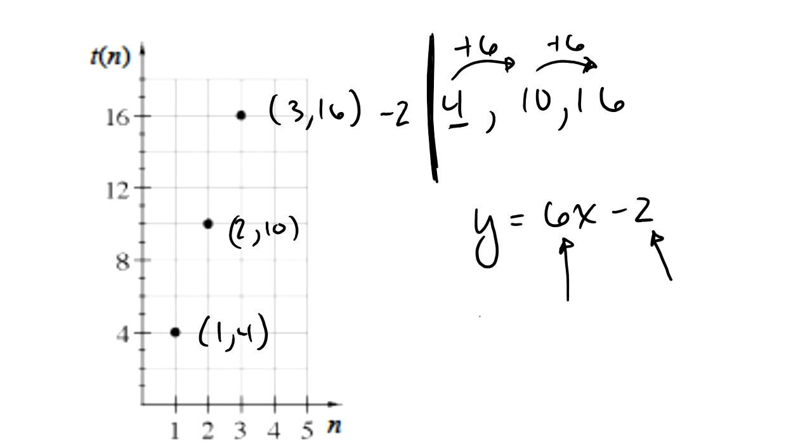And if I wanted to write this as function notation, I could say t(n) = 6n - 2, and they're absolutely equivalent to each other.